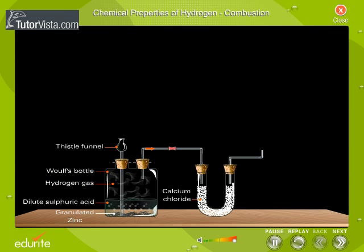Hydrogen gas evolved is passed through a U-tube containing calcium chloride. Calcium chloride absorbs the moisture present in hydrogen.